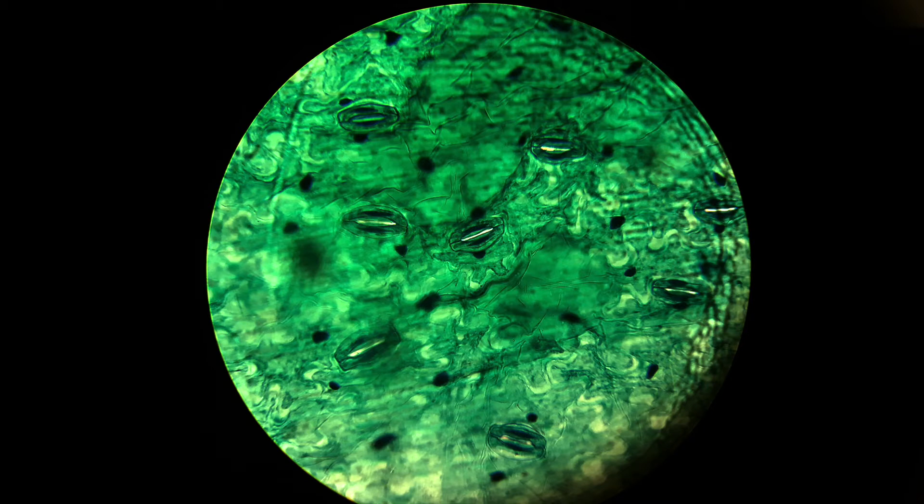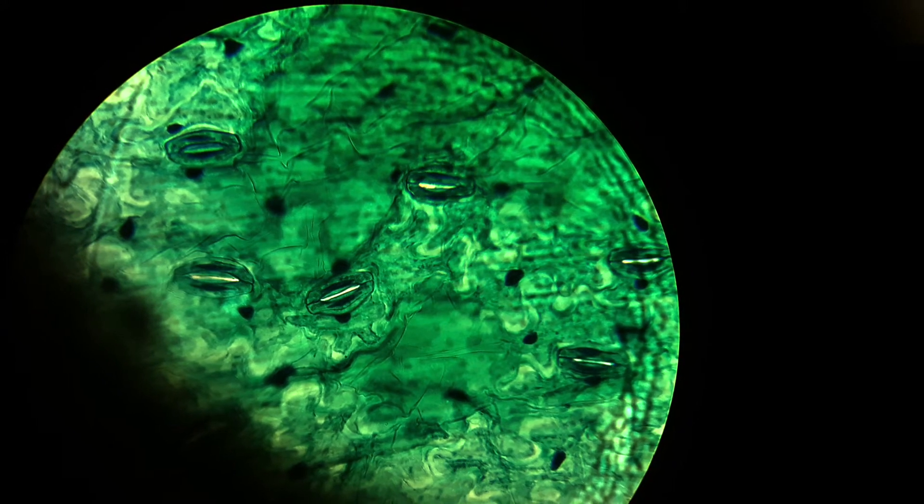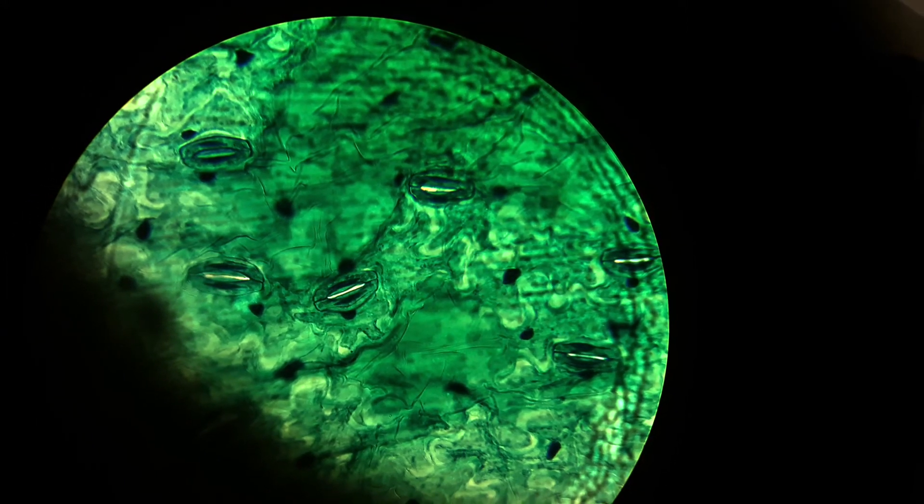Stomata are tiny openings present on the epidermis of leaves. In some plants, stomata are present on stems and other parts of plants.